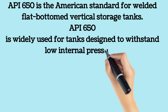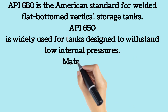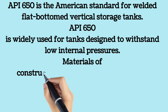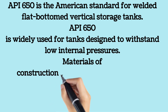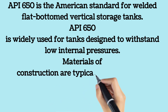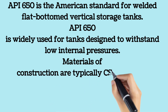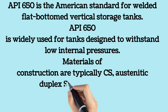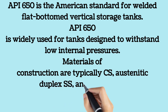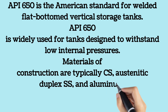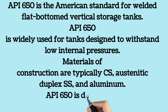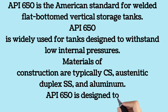Materials of construction for API 650 tanks are typically carbon steel, austenitic duplex stainless steel, and aluminum. API 650 tanks are commonly used for the storage of typical products such as crude oil, petrol, chemicals and water.